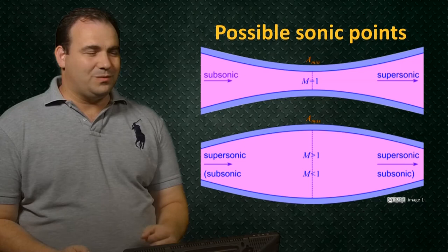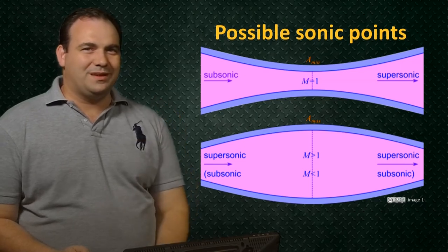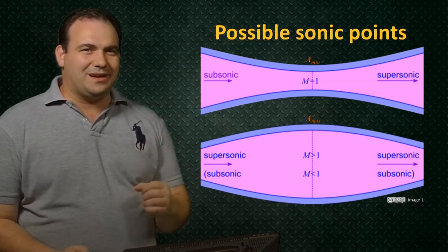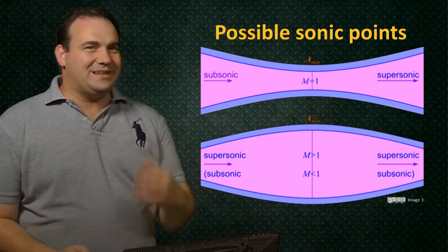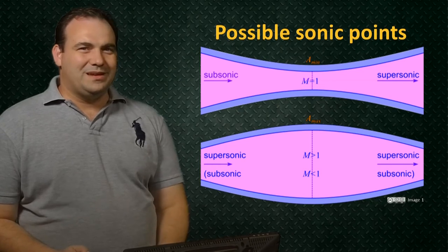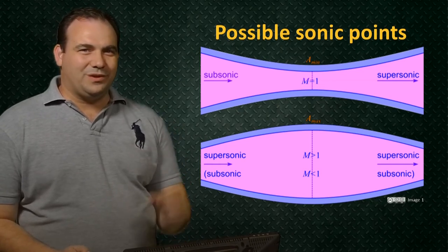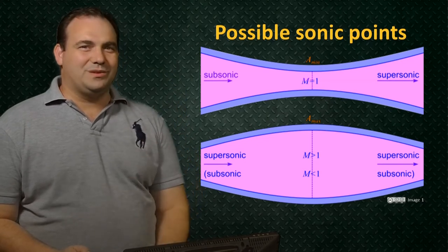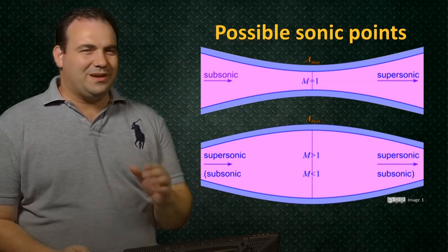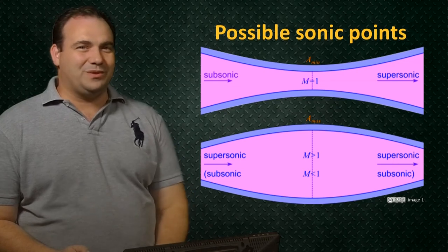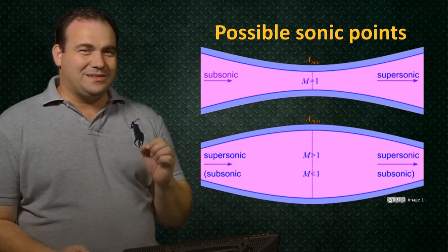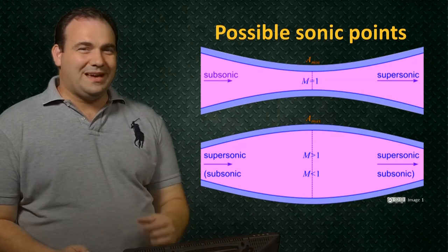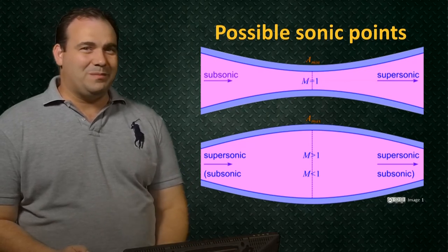Now let's turn our attention to when we have an area maximum. If we assume the flow starts off supersonic, the initial diverging part of the nozzle will accelerate the flow to an even higher supersonic Mach number, and will only begin to decrease once the flow reaches that converging part of the nozzle. So if we start out supersonic, we'll definitely have supersonic flow at the area maximum, not sonic flow. If we start out subsonic on the other hand, that initial divergence will act as a diffuser, and we'll then have an even lower subsonic Mach number at the area minimum.